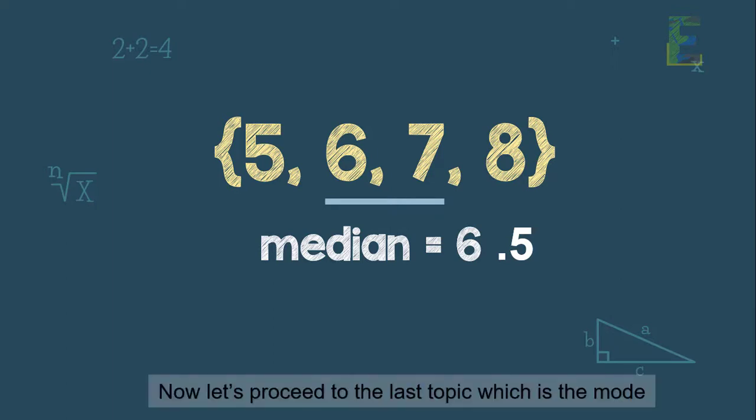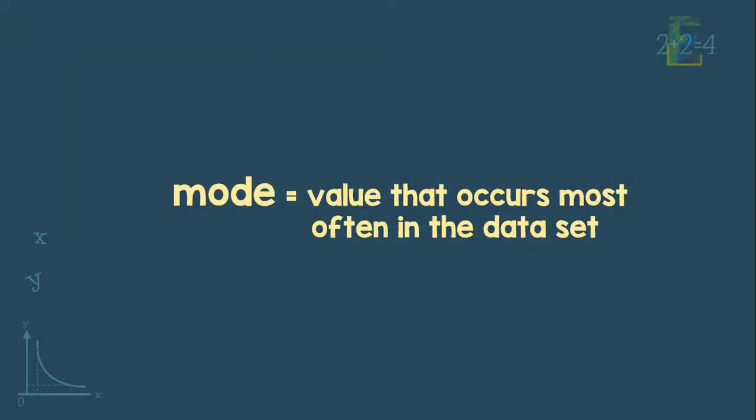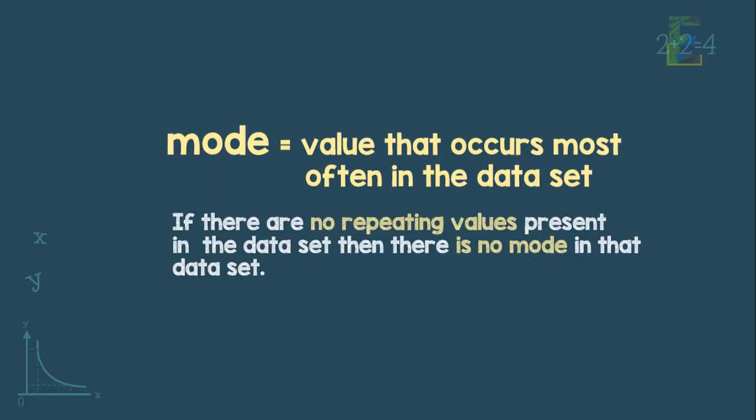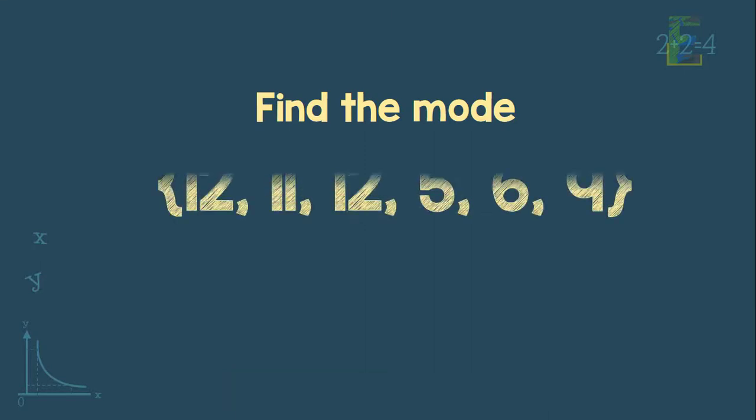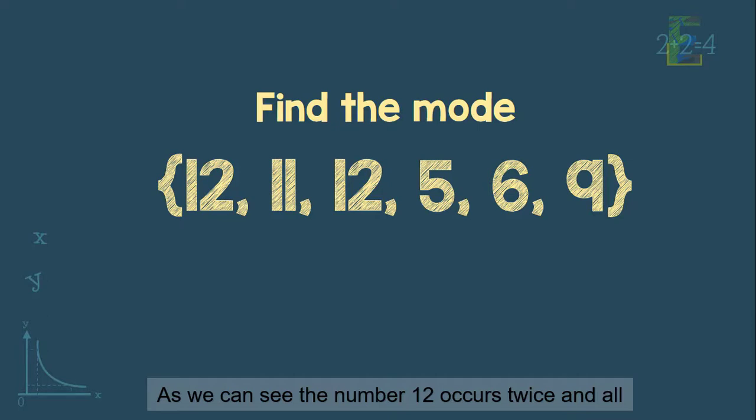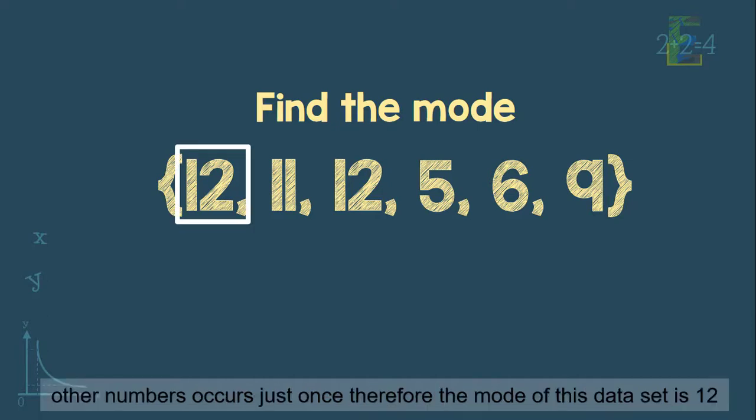Now, let's proceed to the last topic which is the mode. Mode is the value that occurs most often in the data set. So if there are no repeating values present in the data set, then therefore there is no mode in that data set. For example, we have a data set 12, 11, 12, 5, 6, 9. As we can see, the number 12 occurs twice and all other numbers occurs just once. Therefore, the mode of this data set is 12.